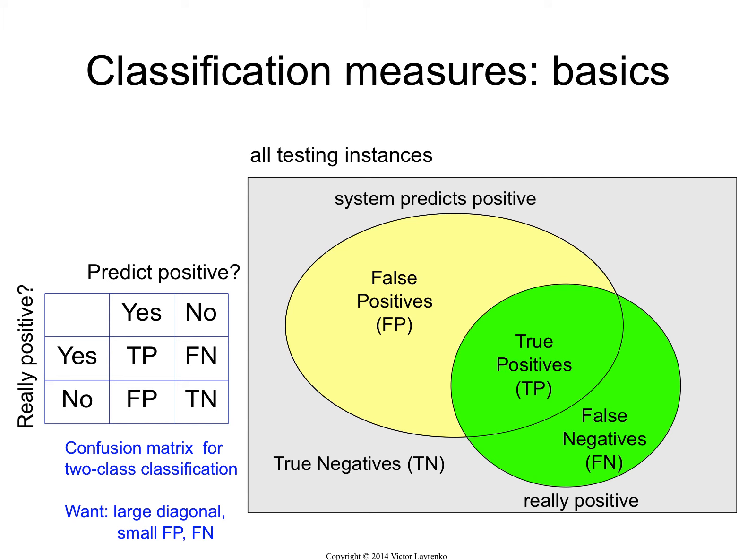The correct classifications — the true positives and the true negatives — are going to be on the diagonal. The errors of the two kinds, the false positives and false negatives, are going to be off the diagonal. When you're looking at a confusion matrix, you want big numbers in the diagonal and small numbers off the diagonal.